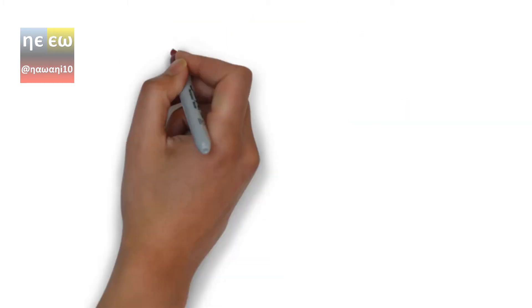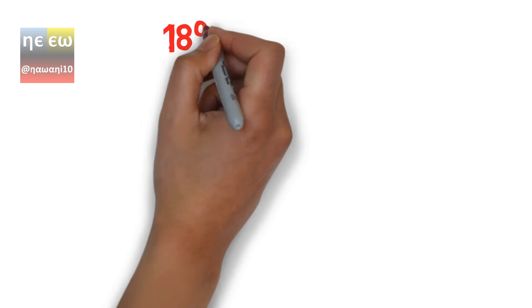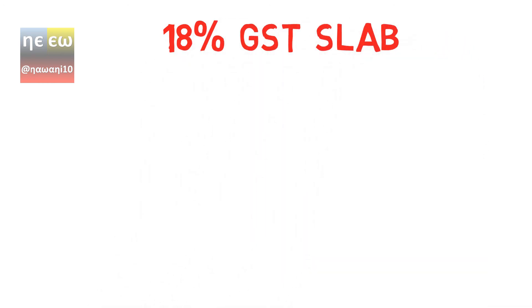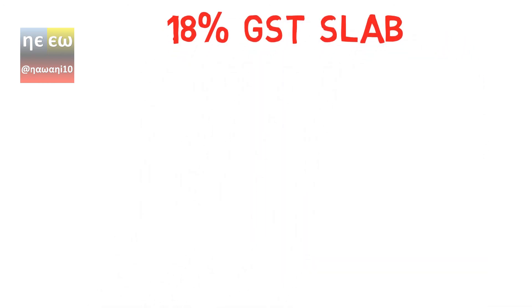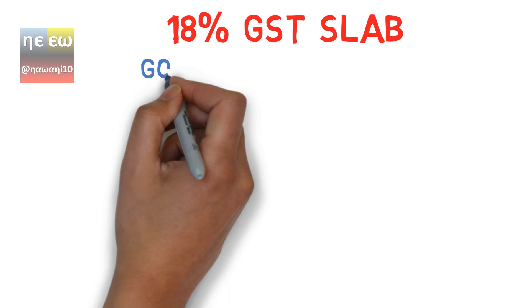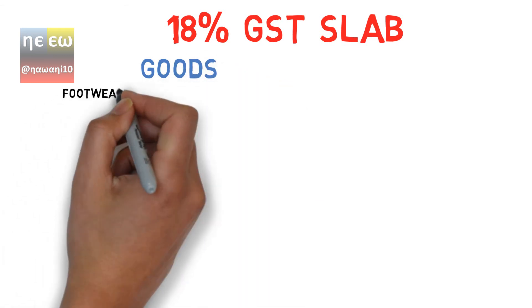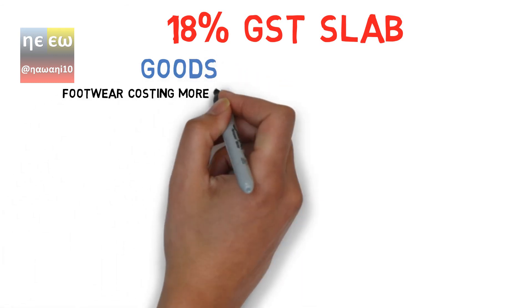In the 18% GST slab, most items are under this tax slab. 18% tax will be imposed on the following goods and services.